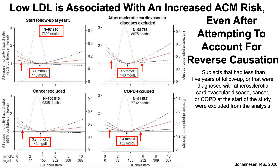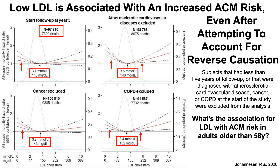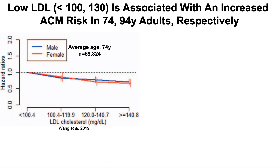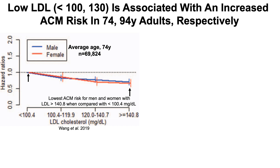This is data up to age 58. What about older? For about 70,000 subjects with an average age of 74 years, all-cause mortality is plotted against LDL on the x-axis. We see decreasing all-cause mortality risk as LDL increases up to around 141 milligrams per deciliter. Compared with LDL less than 100, 74-year-olds with LDL greater than 140 had a lower all-cause mortality risk — again showing that higher LDL, but not super high, is better than lower LDL.